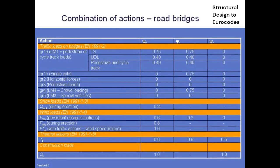These are typical values for the various psi factors. For quasi-permanent, everything is zero with the exception of thermal actions — the average thermal effect is 50% of the full characteristic effect (psi_2 = 0.5). For the combination factor psi_0, the tandem system has 75% of its full value, and pedestrian loads have 40%. These values are mirrored in the frequent factor psi_1. You take these values straight out of the national annex of the country you're working in — the values shown are the recommended values; UK values are pretty much the same.